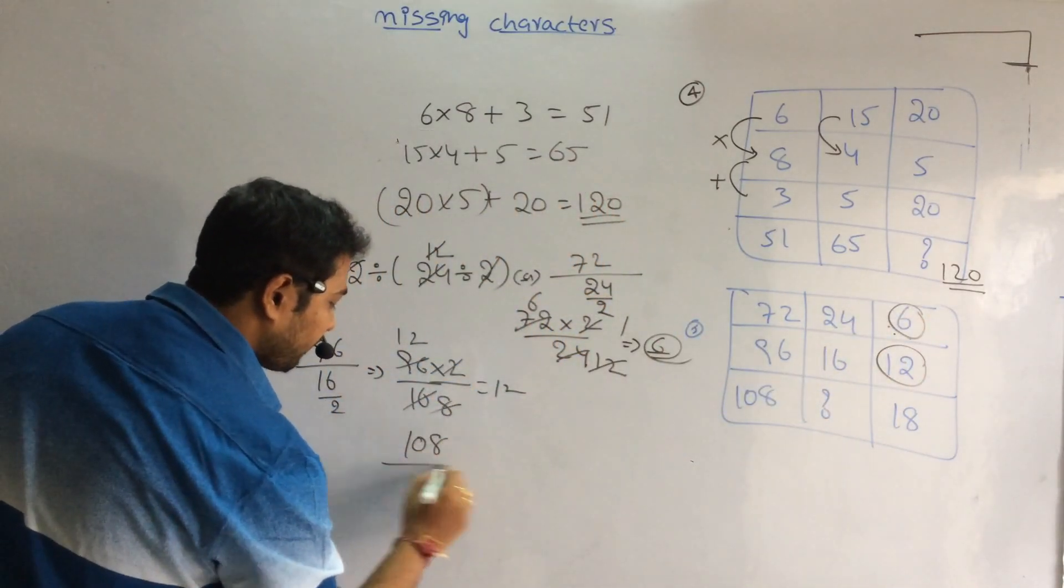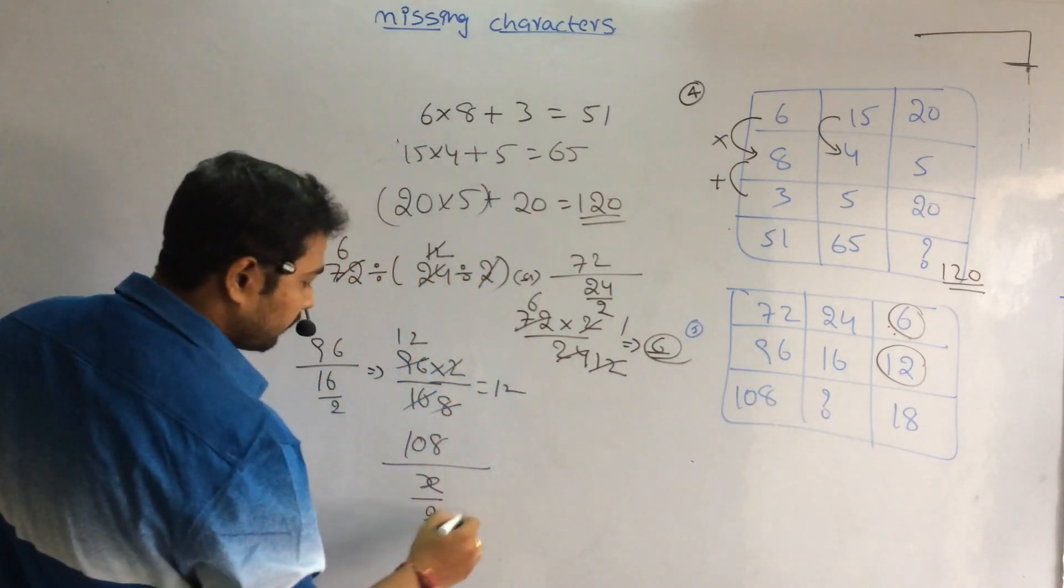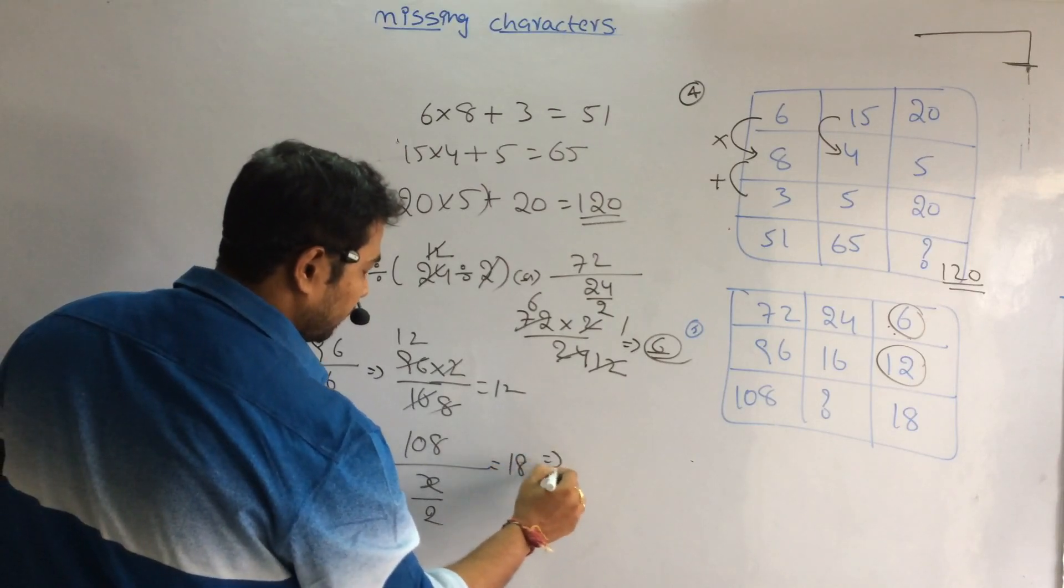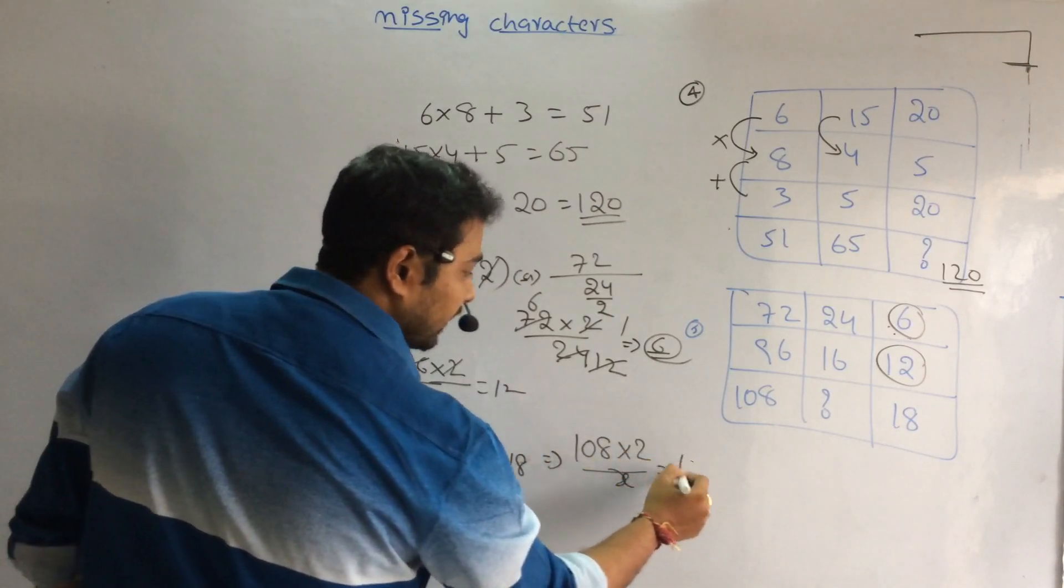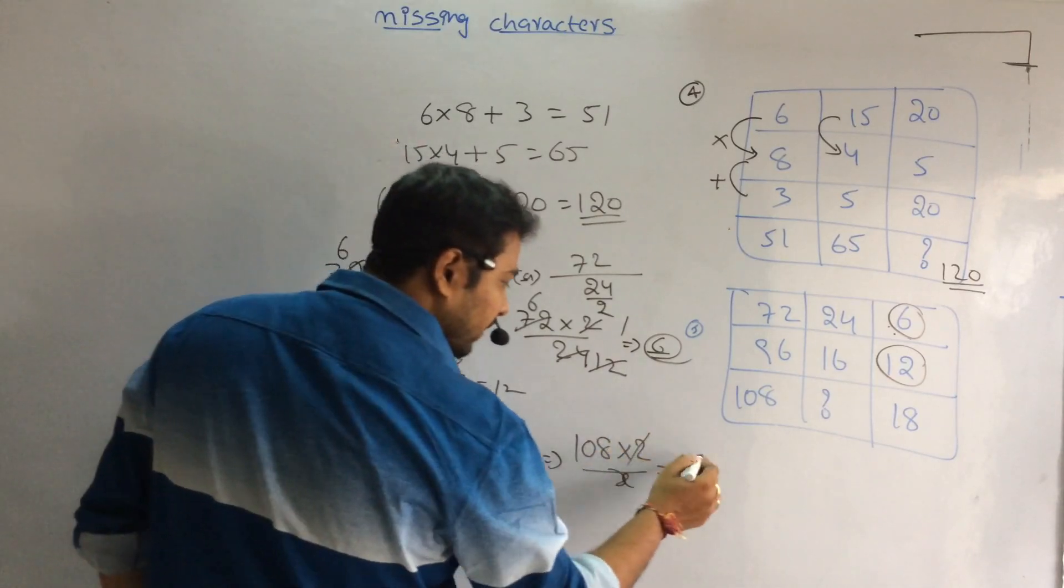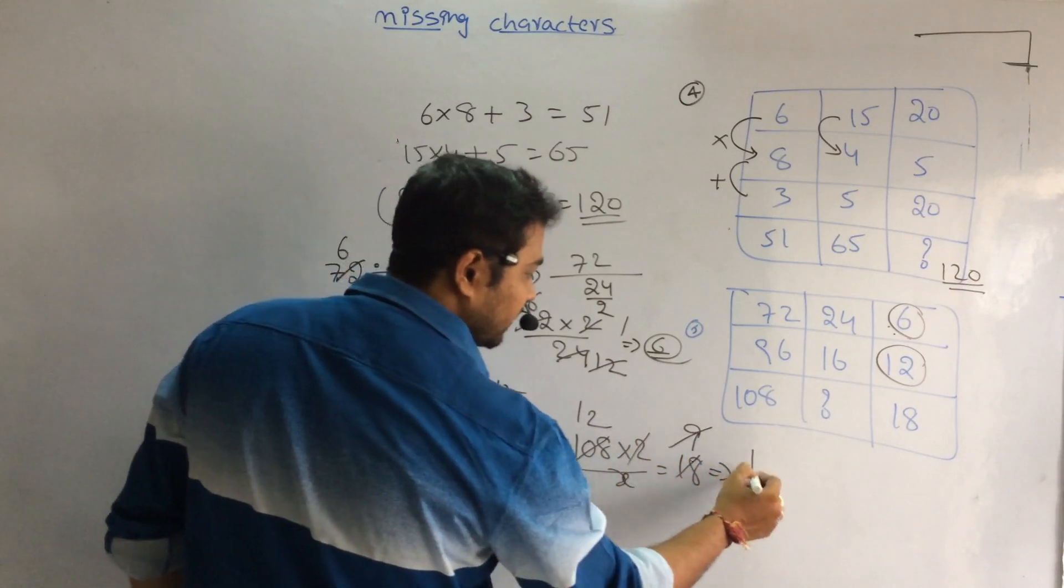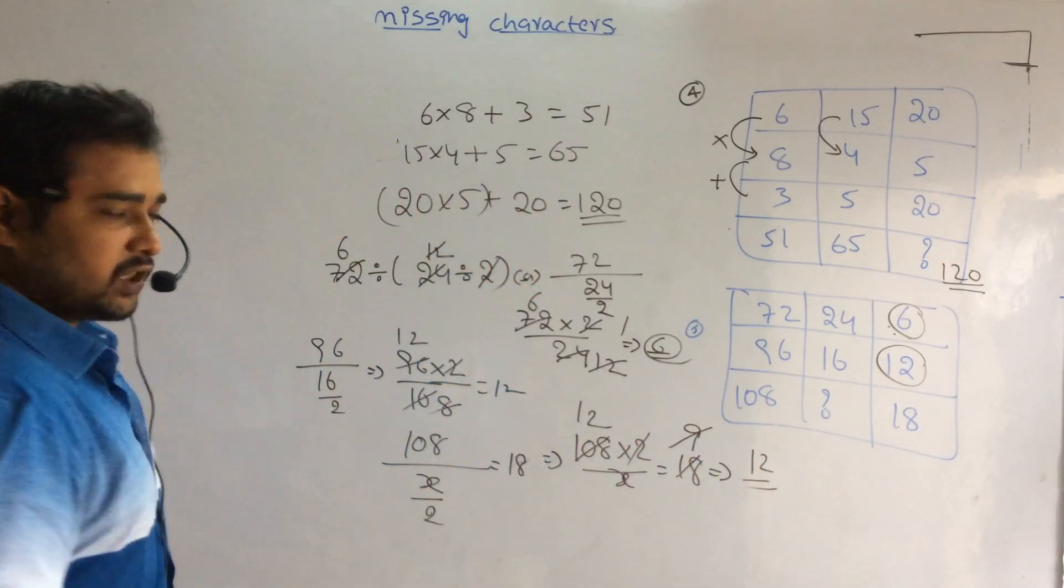Likewise, 108 divided by x, whole divided by 2, is equal to 18. That means 108×2 divided by x equals 18. 2×1 is 2, 2×9 is 18. 9×1 is 9, 9×2 is 18. That means the value is 12 is my answer.